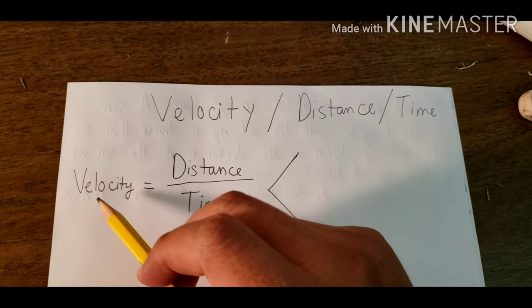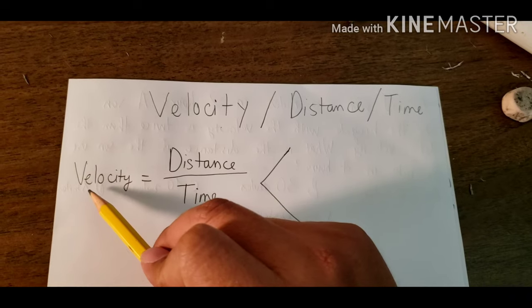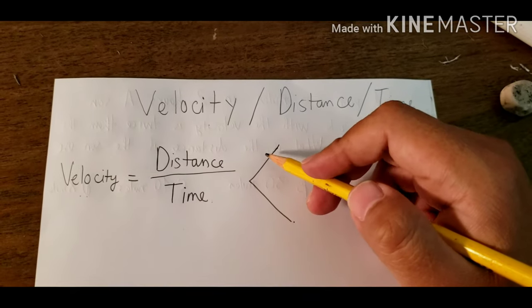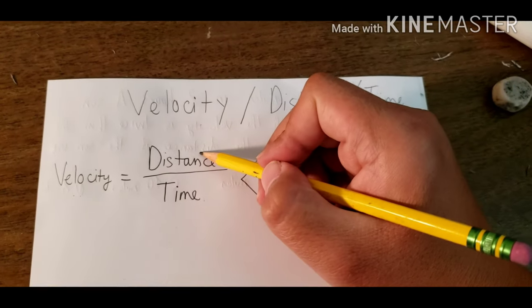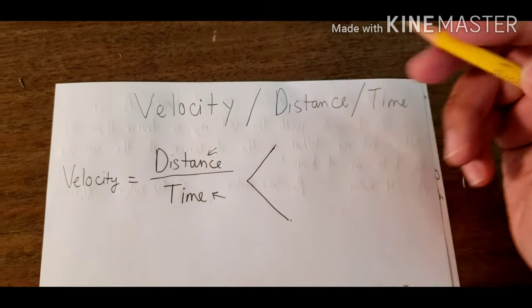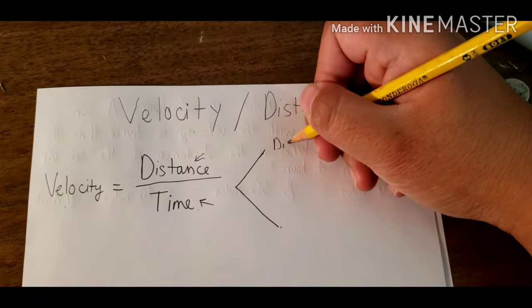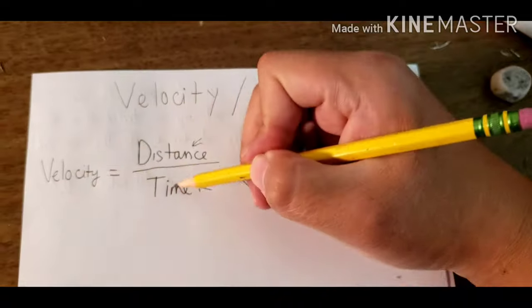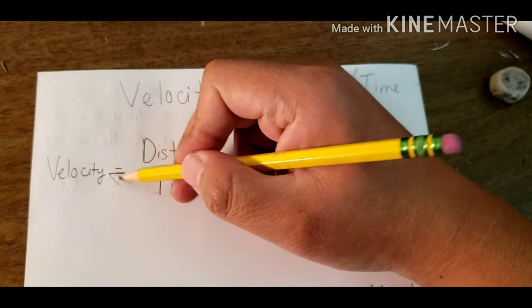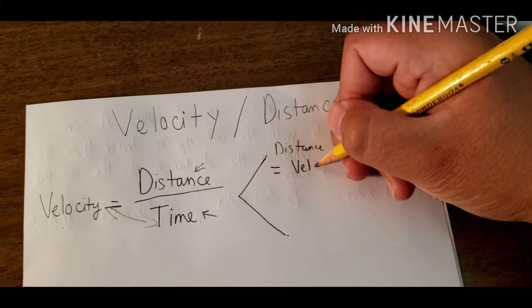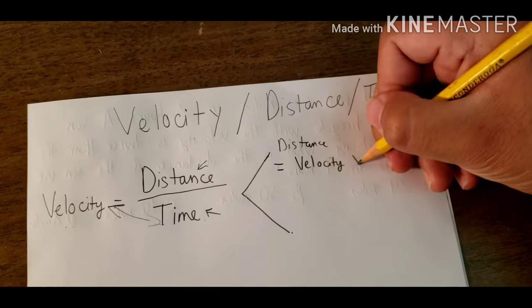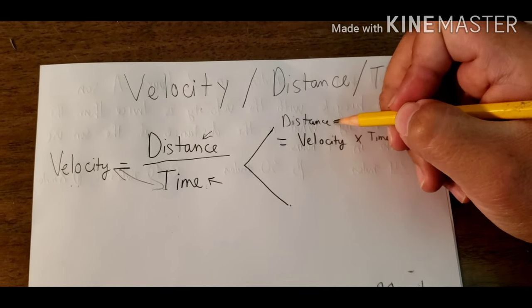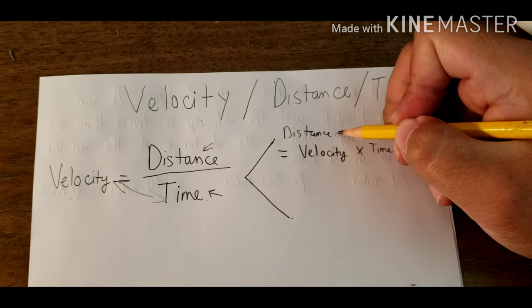First, we need to know the basic formula: velocity equals distance divided by time. If the text asks you to find the distance, you must know the velocity and the time, and they should be multiplied together. That is how we calculate the distance for a car or an object that moves.